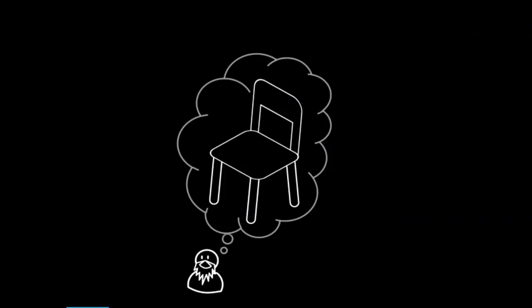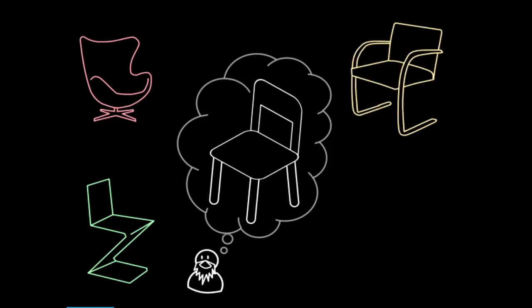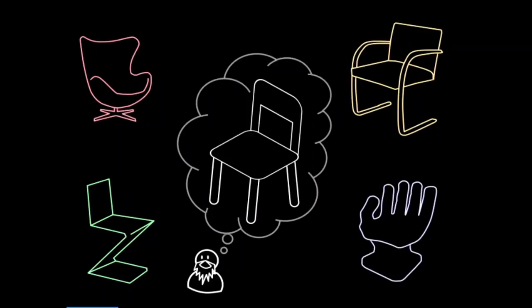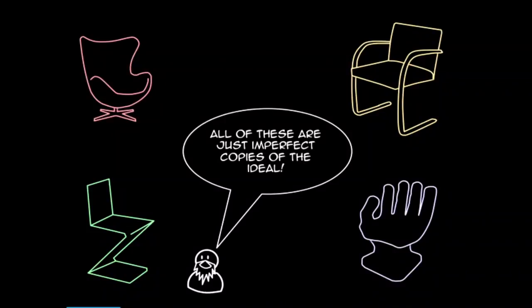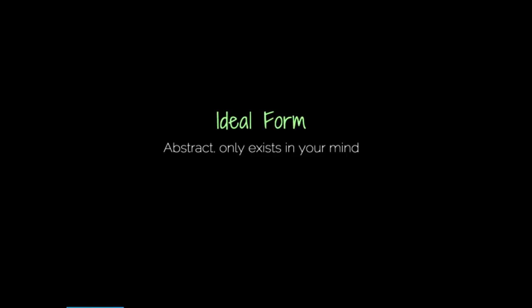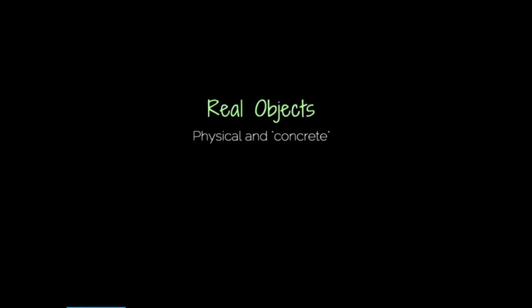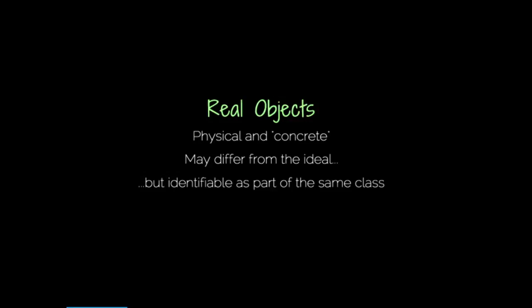Let's take another example. Plato is trying to imagine the Platonic chair — the ultimate chair of chairness. But the world keeps screwing things up, giving us all these different kinds of chairs, some of which are really bizarre. Plato is saying all of these are just imperfect copies of the ideal. So we have something called an ideal form that exists in the Platonic realm — it's abstract, it really only exists in our mind. But it represents a class of real things. Real objects are physical and concrete; they may differ from the ideal, but they're still identifiable as belonging to the same class of things.